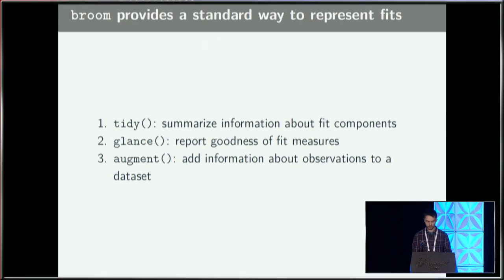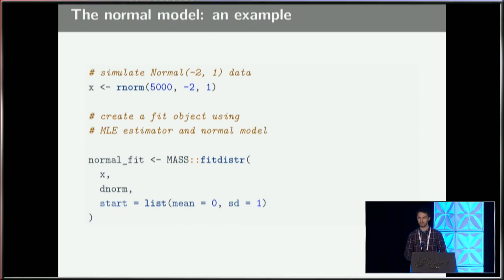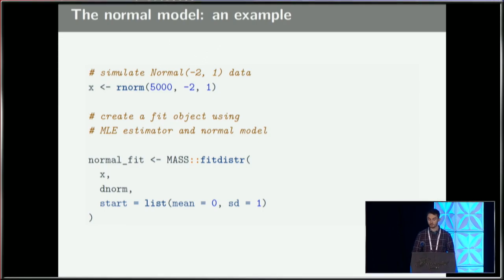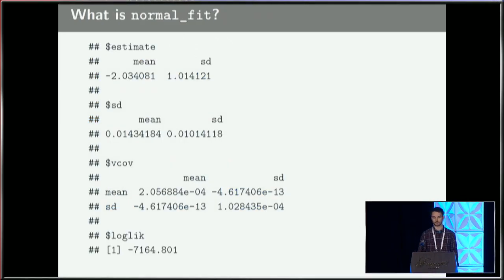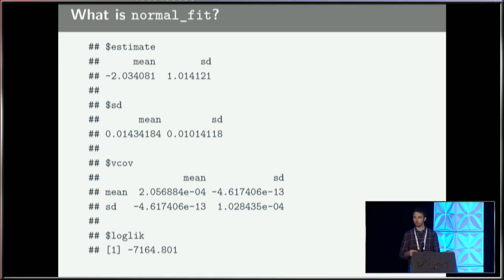Let's work through a simple example. Suppose we have some data simulated from a normal distribution, and then we get a fit — this normal fit object represents the maximum likelihood estimator of the parameters of this model. If we look at the raw normal fit object, what we get is a list. We have the maximum likelihood estimates, their standard deviations, the covariance, and the log likelihood. It's actually a pretty nice object, but the big issue is that if you go to a different package it could look really different.